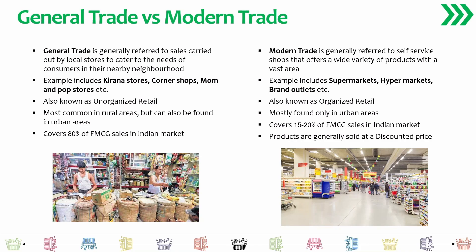Modern trade generally refers to self-service shops that offer a wide variety of products across a vast area — like supermarkets, hypermarkets, brand outlets, or franchisee outlets. Globally, brands such as Walmart, Target, Costco, and Best Buy are key examples. In India, some prominent ones are Big Bazaar, D-Mart, Lulu Supermarket, Spencer's Retail, Reliance Fresh, More Retail, and Star Bazaar. These retail chains are mostly found in urban areas but are fast expanding into rural regions as well.